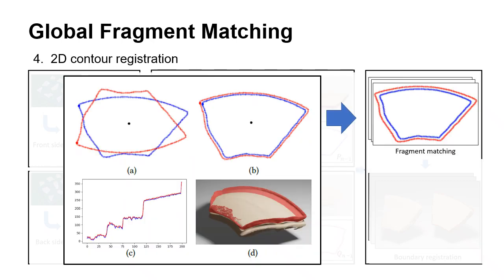Meanwhile, for each fragment, we can align the 2D contours of two sides to get a good initialization for the following ICP registration.